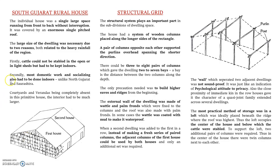The structure evolved from a simple mud layer application to solid wall construction with mud. One interesting feature found in South Gujarat is the formation of a structural grid — something not present in North Gujarat. Here we can see a very proper formation of a structural grid, consisting of a series of bays, initially three to five bays. The roofs were more steep because South Gujarat receives more rainfall.